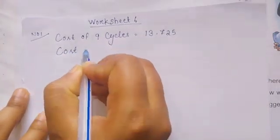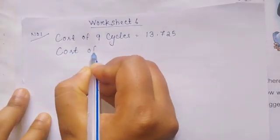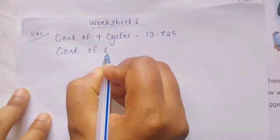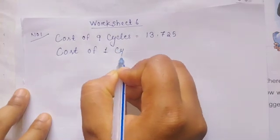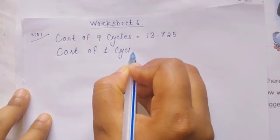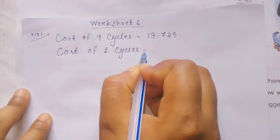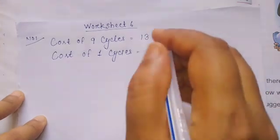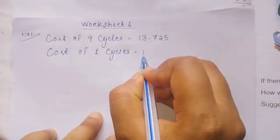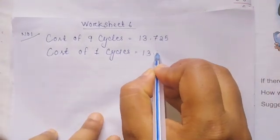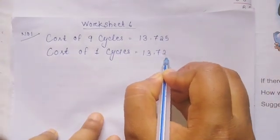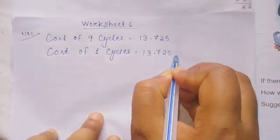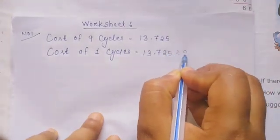Cost of 1 cycle equals 13,725 divided by 9.